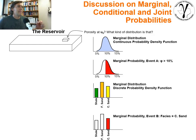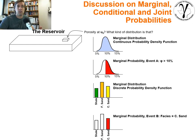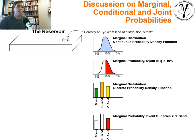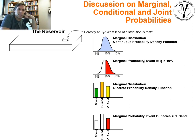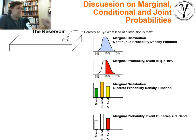Many students get confused when we talk about marginal, conditional, and joint probabilities, and also when we introduce the idea of univariate and bivariate. I thought it'd be nice to record a very simple, short illustration of these concepts and make it practical, in hopes that it will help get this stuck in the minds of my students.